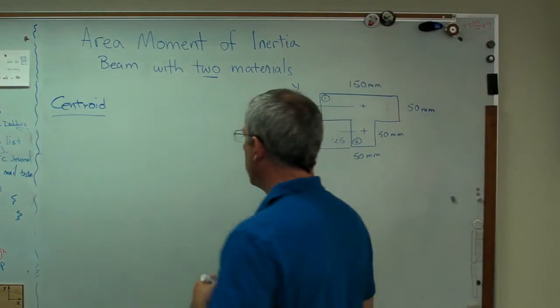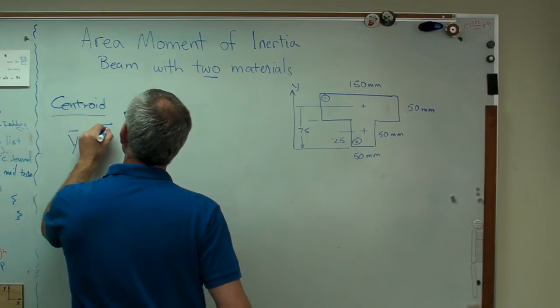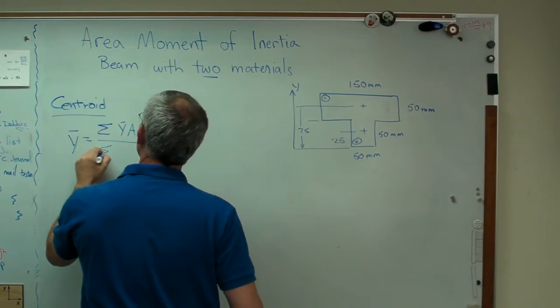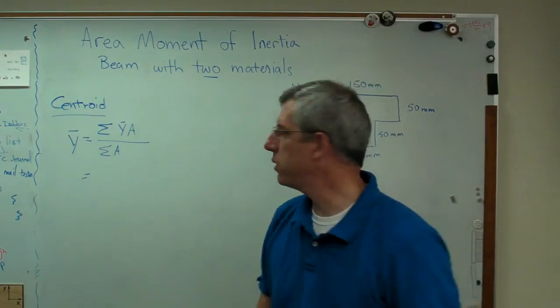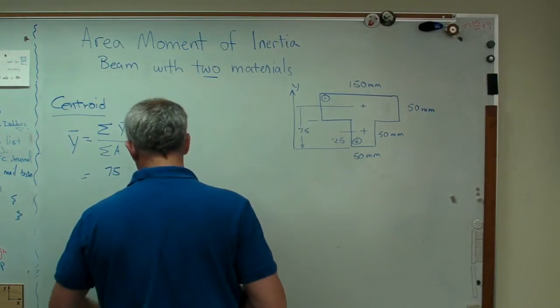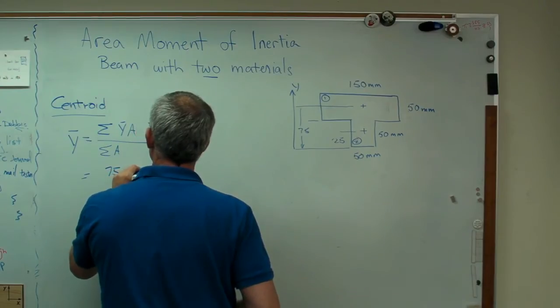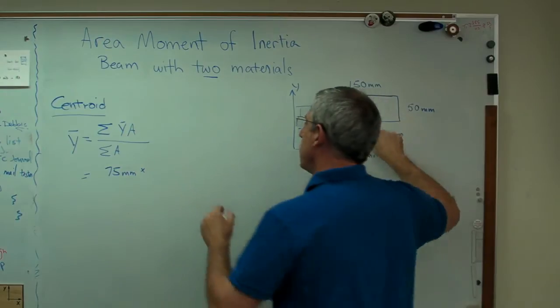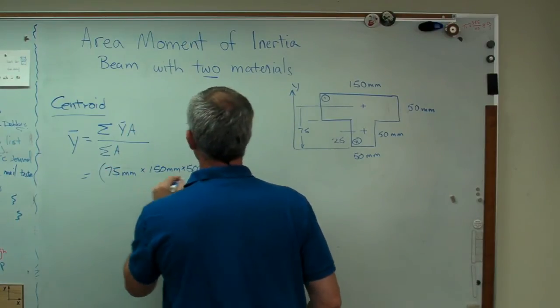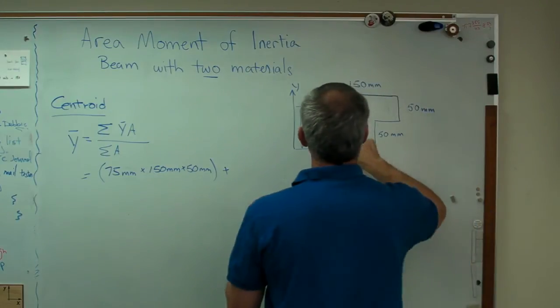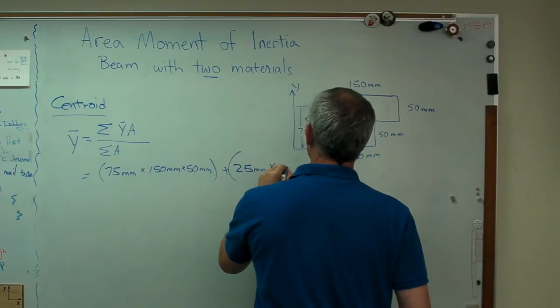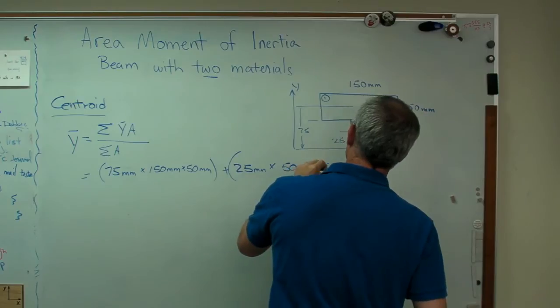Well, the expression for finding a centroid is I sum the centroids of the individual boxes times the area of the boxes over the sum of the areas. Well, there's only two boxes here. So this is pretty straightforward. Centroid of the first one is 75 millimeters. So I've got to do this in, keep my units there. 75 millimeters times the area of that box. So it's 150 times 50. That's box 1 in the first box. Do the same thing for the second box. The centroid is 25 millimeters above my assumed axis there.